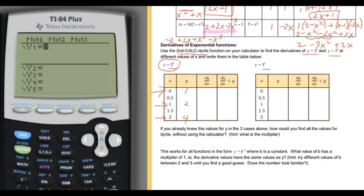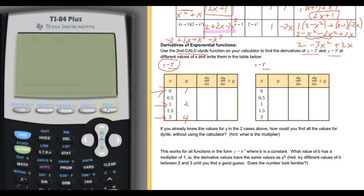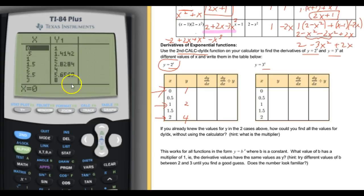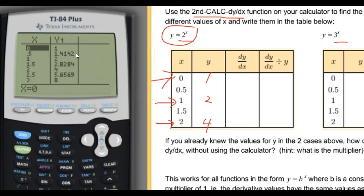We're going to put the function 2 to the x in, then do second table, and jump by 0.5. We see the x=0 value is 1, x=1 is 2, x=2 is 4, just like we saw. The intermediate value at x=0.5 is 1.414, so we write 1.41. And for x=1.5, the value is 2.83.